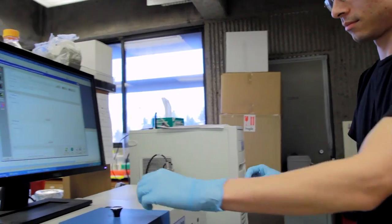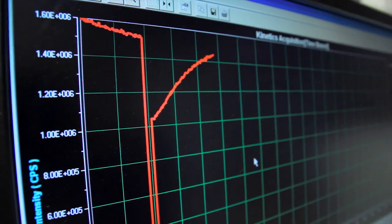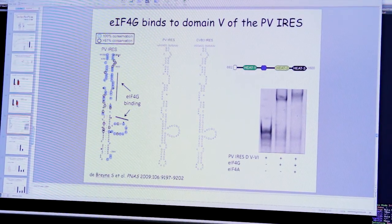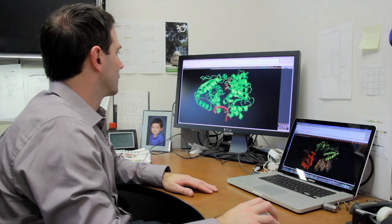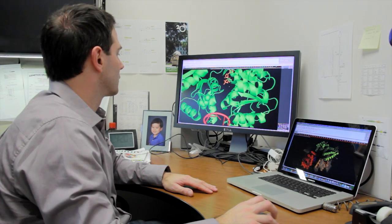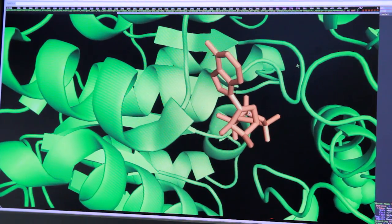We've got two main themes of our research at present. One is to understand how cellular messenger RNAs are translated into protein, and another is to understand how viruses actually hijack the cellular machinery to make its own protein.